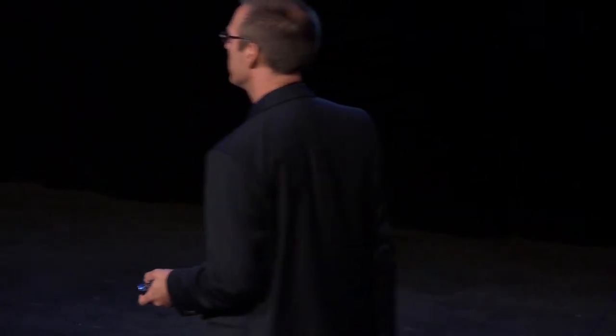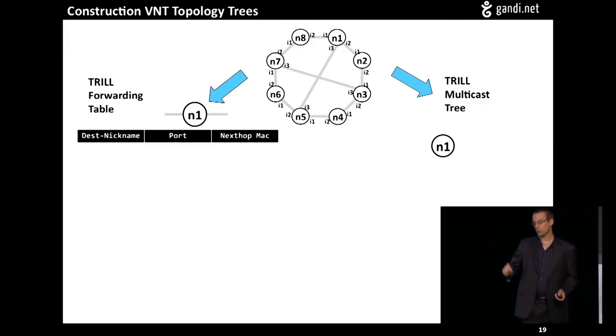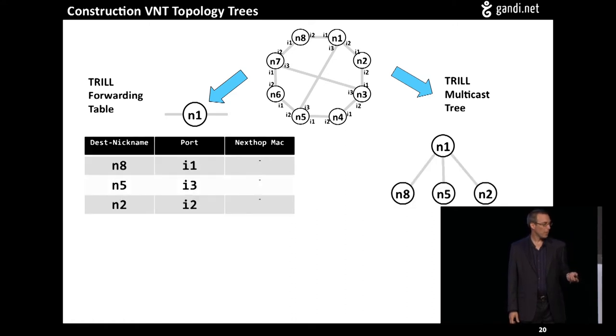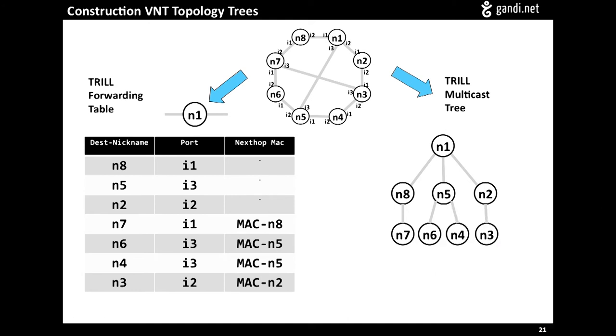So a little bit about how it works. I promised you a technical talk, and here it is. For a given topology like this one where we have eight nodes, in TRILL you build a forwarding table for every single node. You also build one or, if you want, more multicast trees. So I'm going to build the forwarding table and the multicast tree based on node 1. And you can see that as we build this table, we're actually mirroring the same paths through as the multicast tree does.